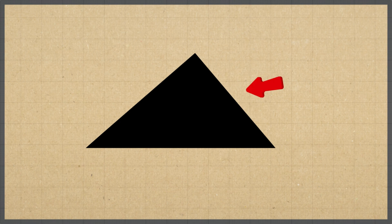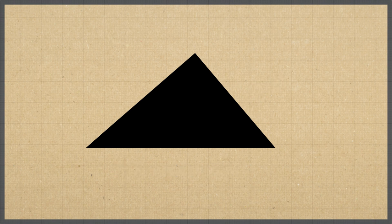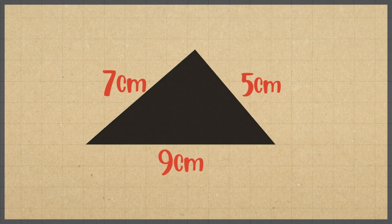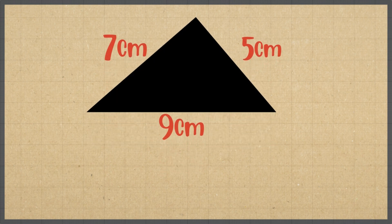Look at this shape. An irregular triangle is a triangle with three sides of different lengths. In this example, the first side measures five centimeters, the second side measures seven centimeters, and the third side measures nine centimeters.